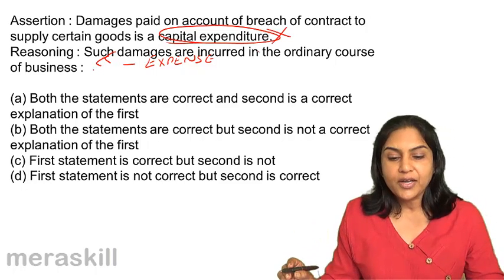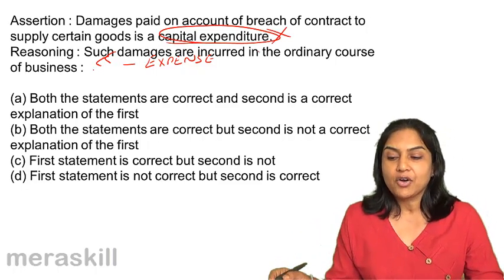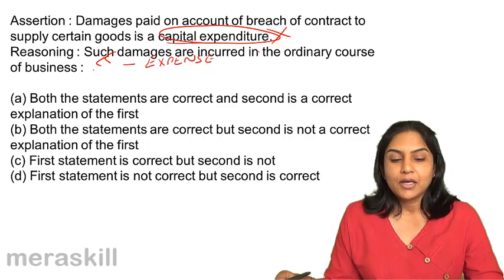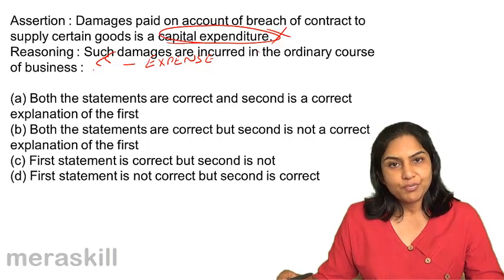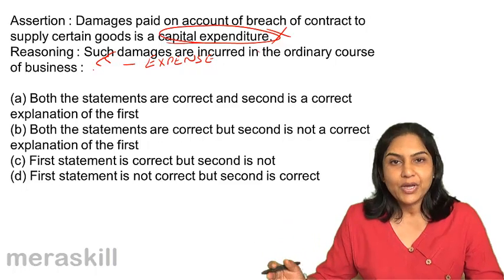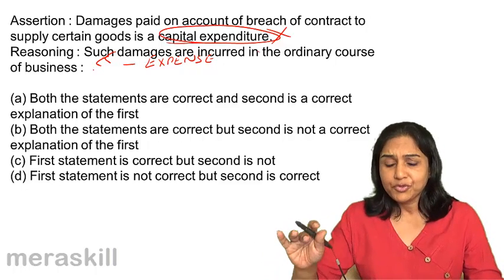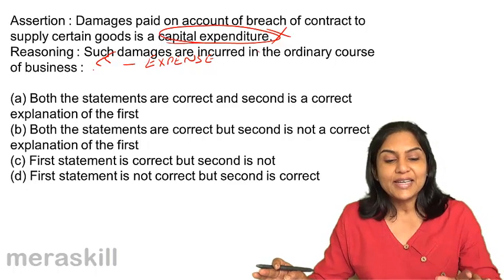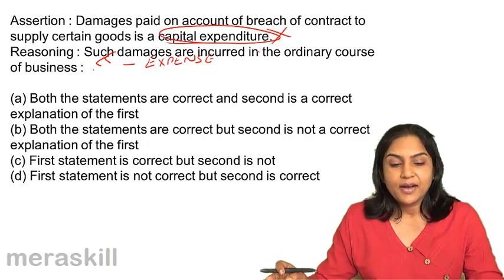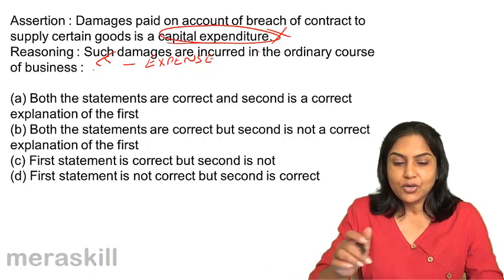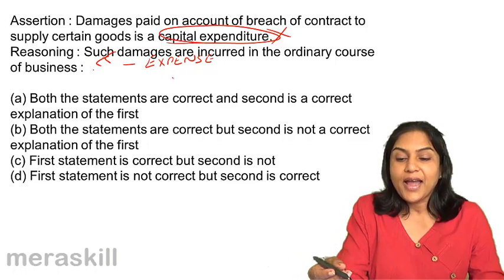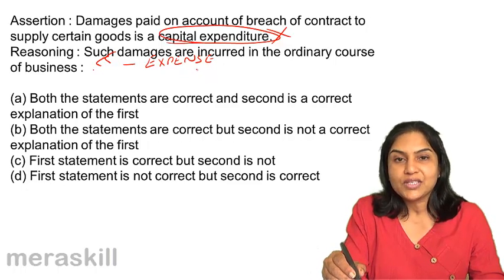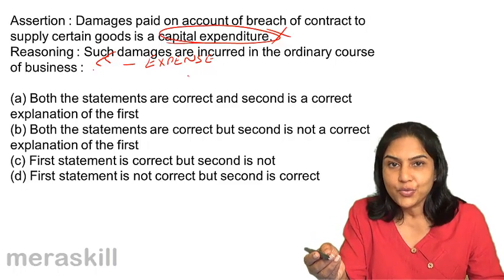Damages paid on account of breach of contract to supply certain goods is capital expenditure — no, it would be a revenue expenditure. Therefore, the first sentence is wrong. And though they have given a reasoning, the second is not really an explanation of the first, because the first says capital expenditure while the reasoning given supports it being a revenue expenditure.